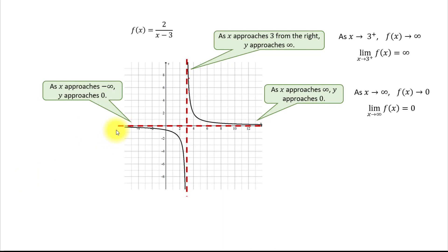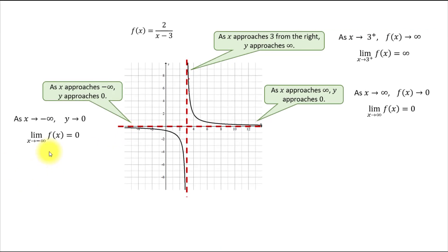As x approaches infinity, y approaches zero. And here's the alternative limit notation. Limit of f of x as x approaches negative infinity equals zero.